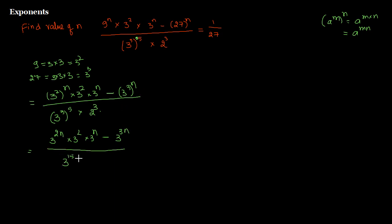This continues divided by 3 to the power 15 multiplied by 8 — I'm writing 2 cubed as 8 because there are no values in the numerator with base 2. Now looking at 2n plus n, that gives me 3n.